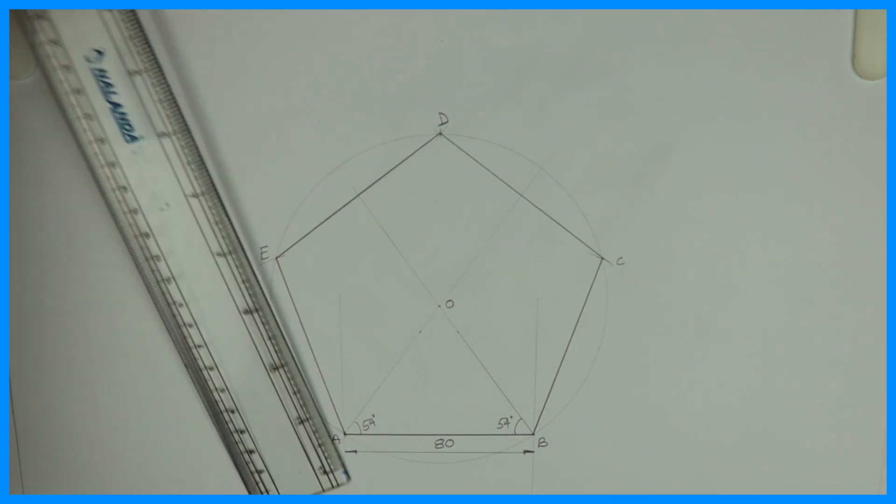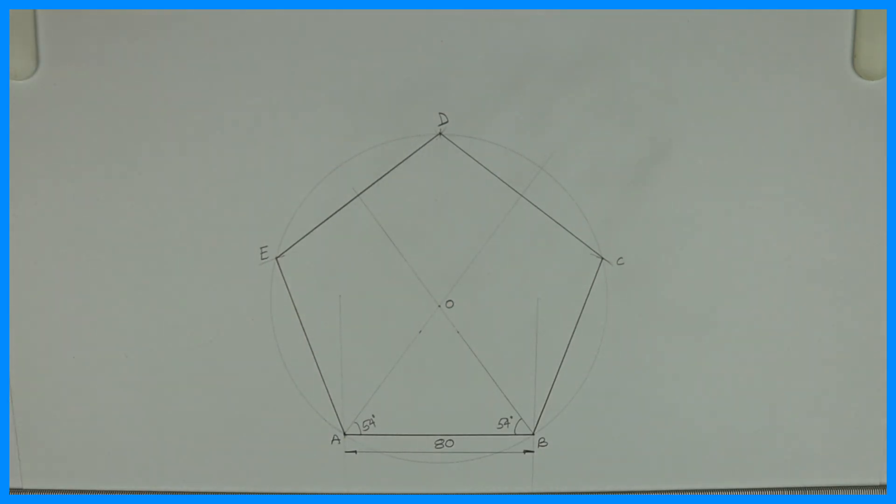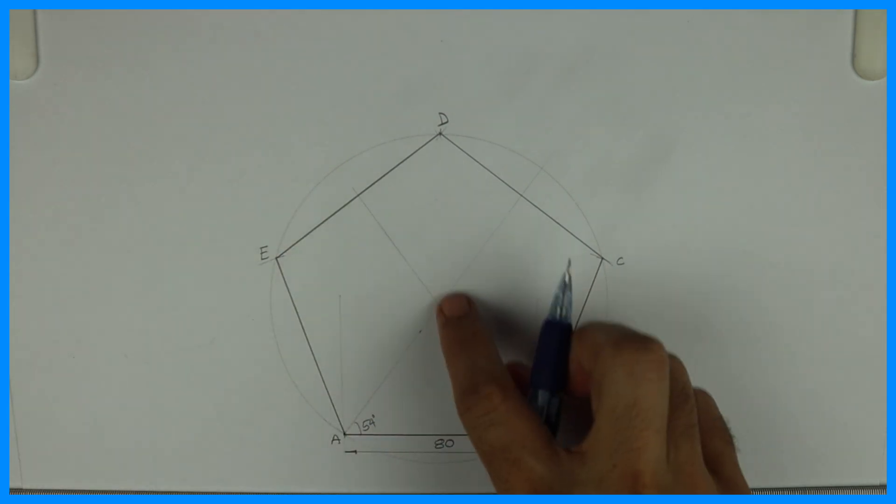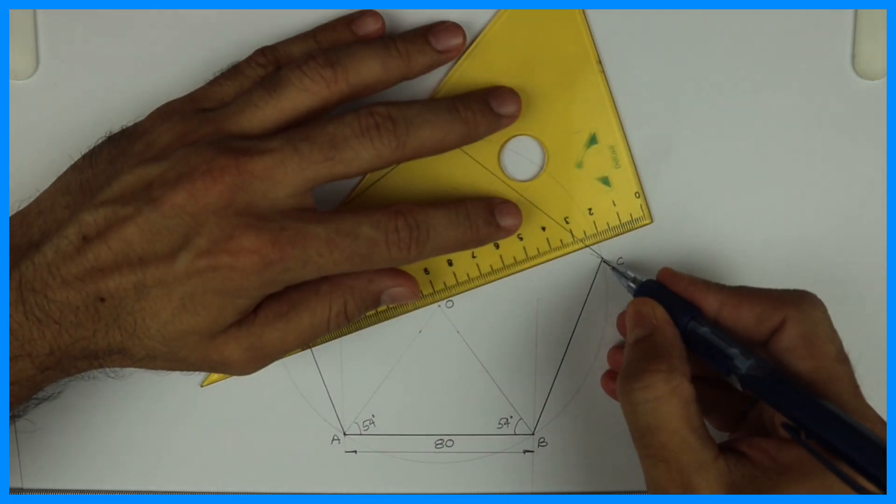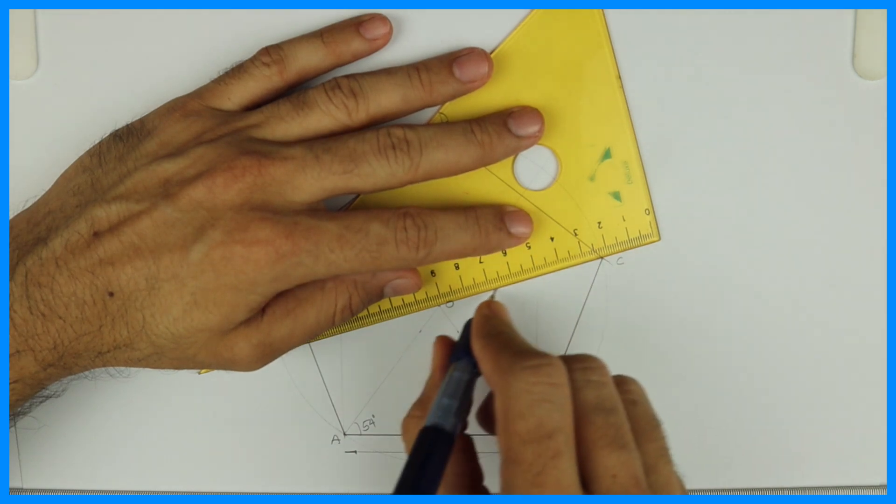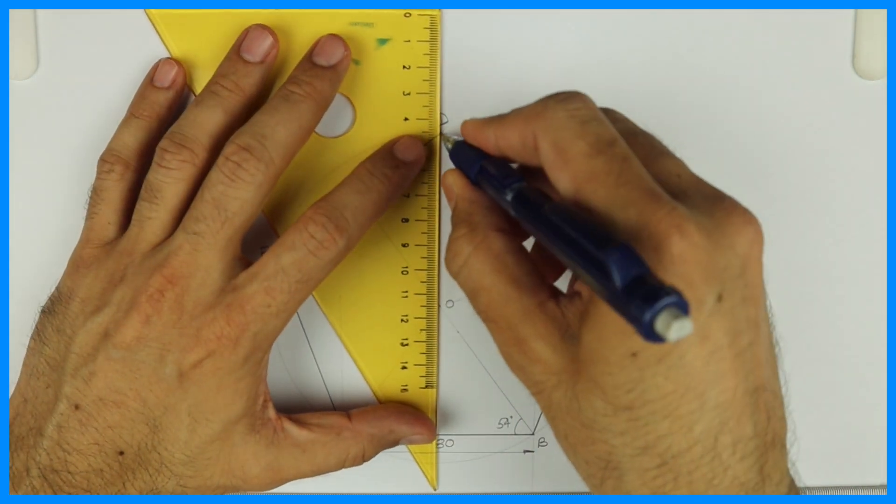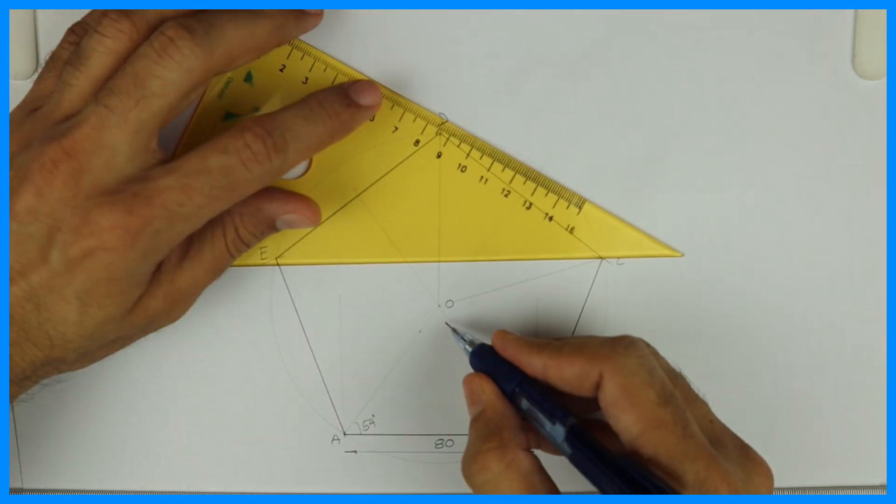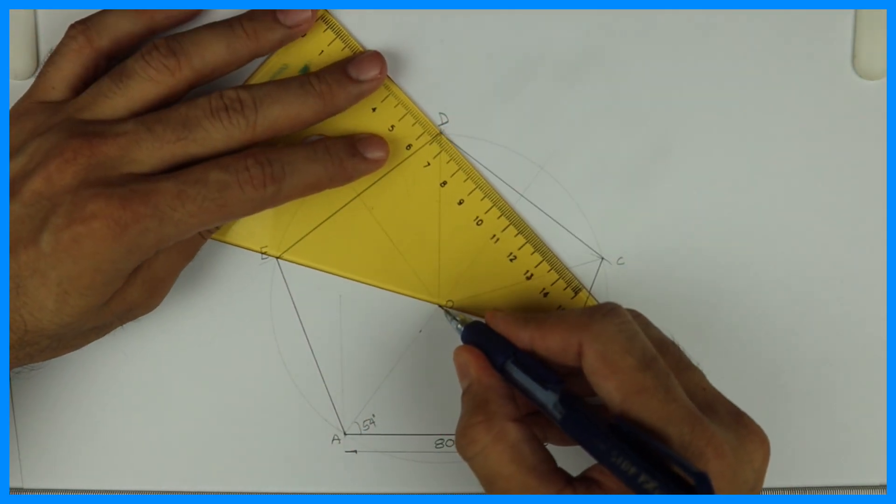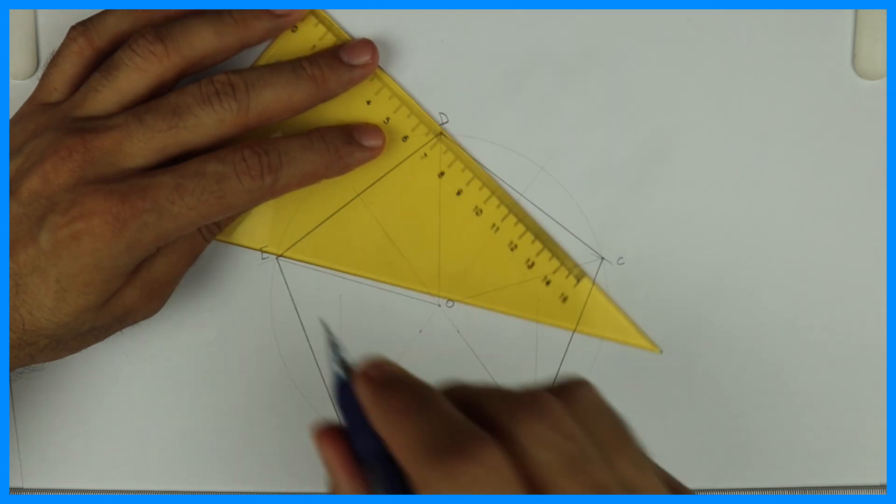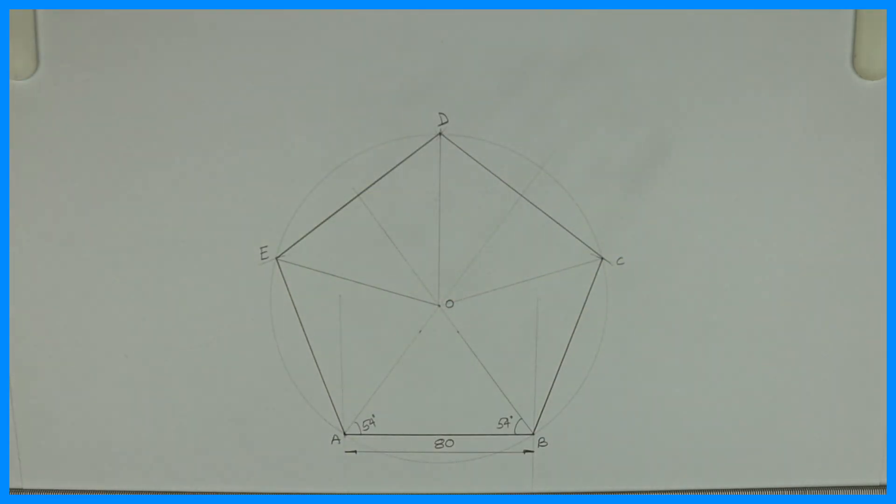Now we have to draw five equal circles, so we need five triangles. We have OAB, OBC, OCD, ODE, and OAE. We have five triangles.